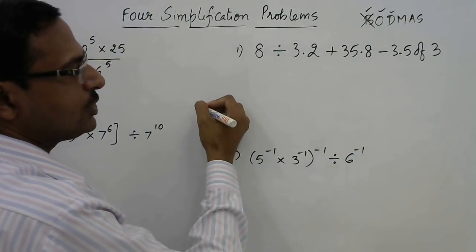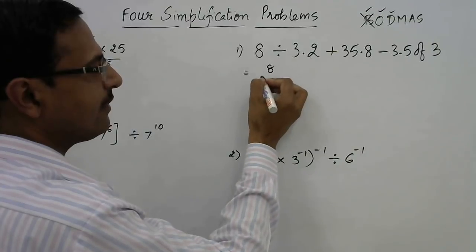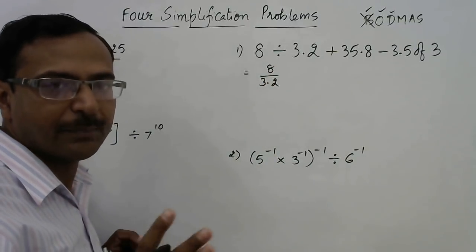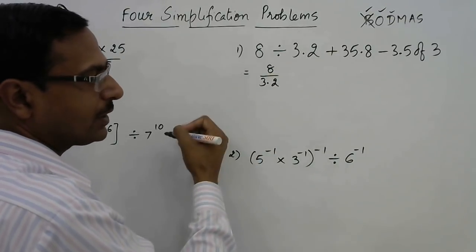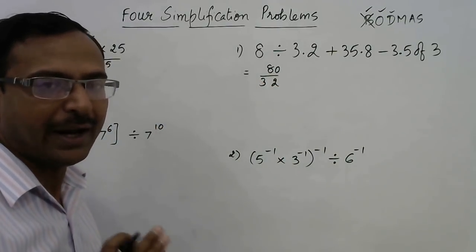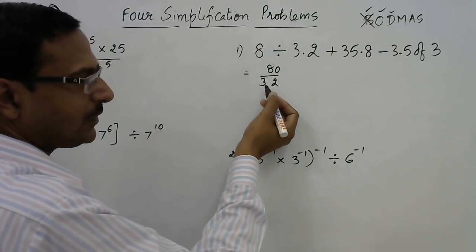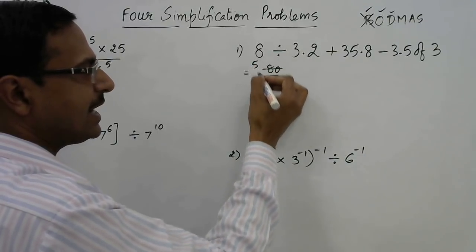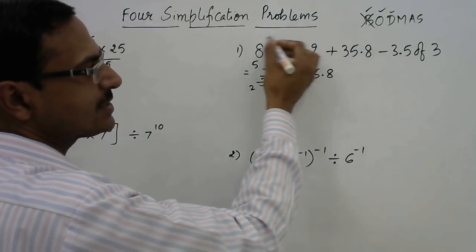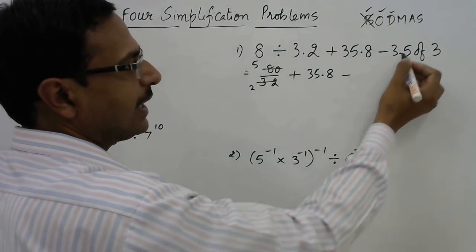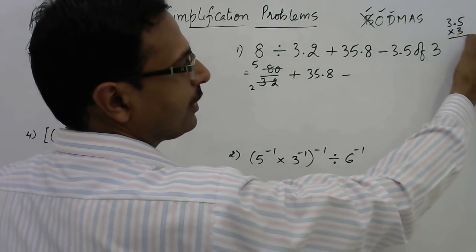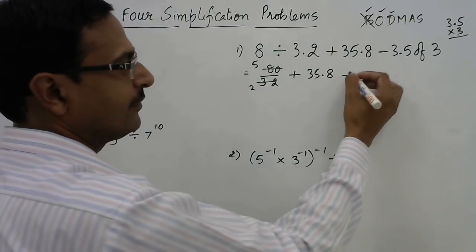See: 8 divided by 3.2. If you write it as a fraction, 8 over 3.2, you can eliminate one step. Now 8 and 32 are multiples — 16 fives are 80 and 16 twos are 32 — so this is actually 5 upon 2, plus 35.8, minus... and 3.5 of 3 means 3.5 multiplied by 3. We all know 3.5 times 3 is 9 plus 1.5, that is 10.5, so we write 10.5 here.